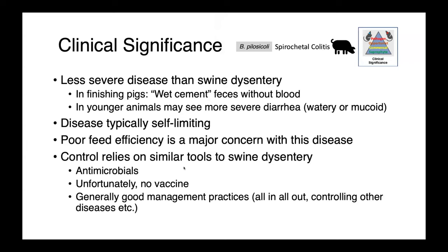Brachyspira pelosicoli causes spirochetocolitis in pigs. This is a less severe diarrhea than swine dysentery. In finishing pigs, we typically see diarrhea with a wet cement consistency — pasty, like a cow paddy — typically without frank blood. In younger animals, the diarrhea can be more watery or mucoid. It's typically self-limiting, and the primary concern is that it's a production-limiting disease, causing poor feed efficiency and poor conversion of feed to weight.